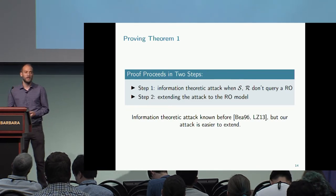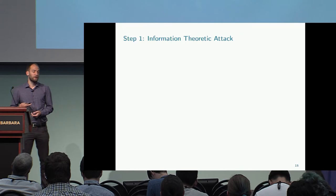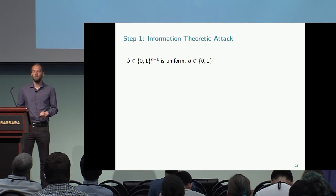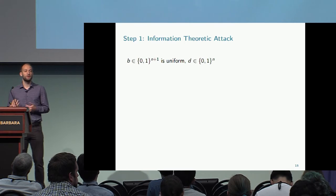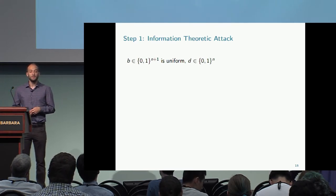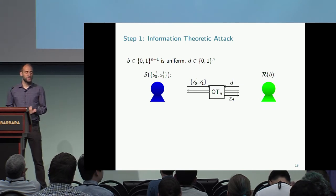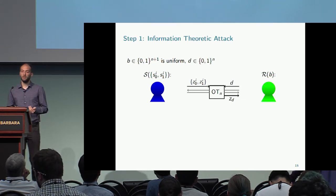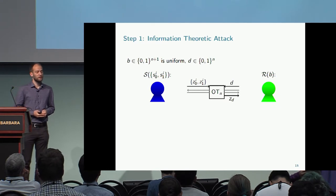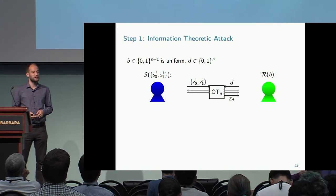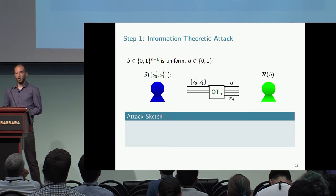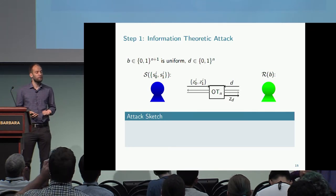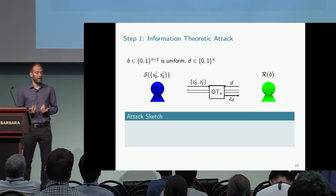In the attack, I assume the receiver's input is picked uniformly at random — this is the input string B, which serves as input. There is also a string D as input to the ideal functionality. The sender and receiver submit their inputs to the ideal OT, have some interaction, and after that the receiver gets the ideal OT output. I use an entropy argument over the receiver's input B, which has n+1 bits of entropy, looking at whether the transcript is correlated with that input.